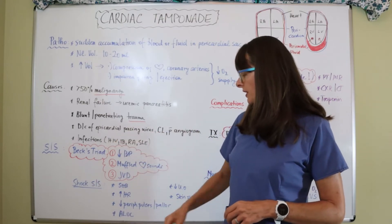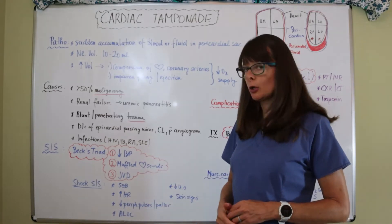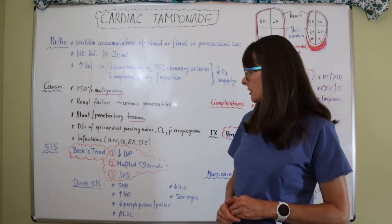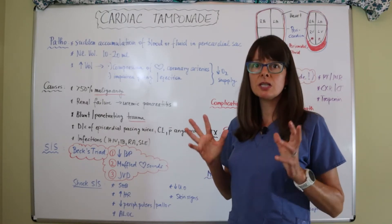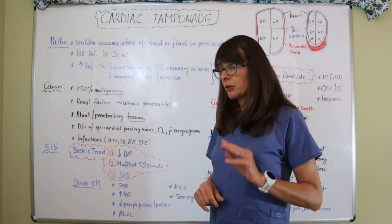Lastly here we have infections such as HIV, tuberculosis, rheumatoid arthritis, and lupus that can also lead to pericardial tamponade or cardiac tamponade.